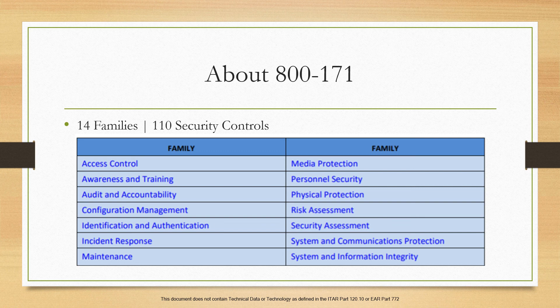And lastly, system and information integrity covers how quickly possible threats are detected, identified, and corrected. This one goes hand in hand with incident response and accounts for seven controls.